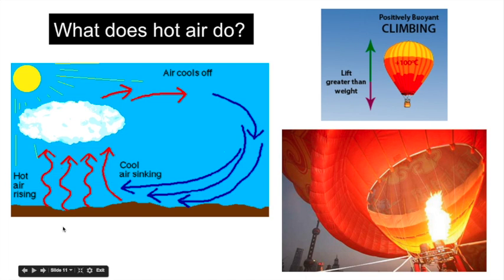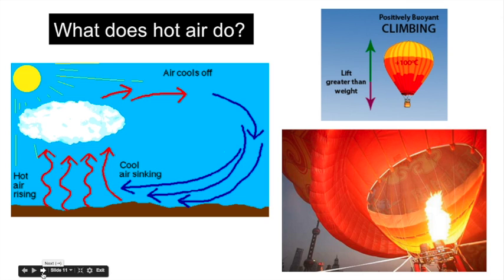What does hot air do? Hot air rises. As it rises, it cools, and then it cycles back as cool air. We use this principle to ride in hot air balloons — you heat the air up, capture the heated air, and the lift is greater than the weight. The buoyancy of the air, being less dense, causes it to rise and carry the balloon and passengers up into the air. Hot air rises.